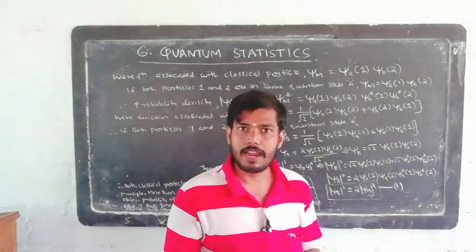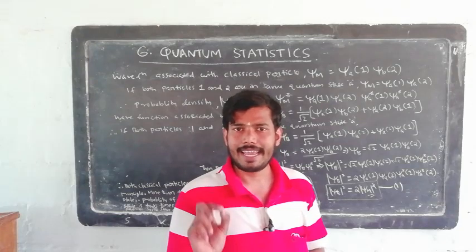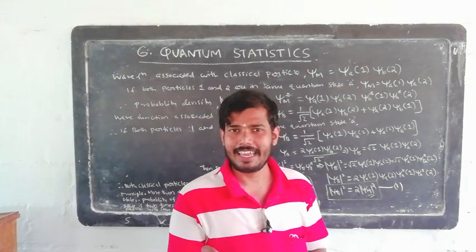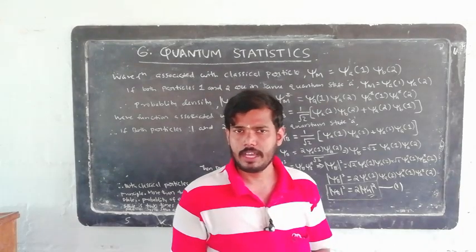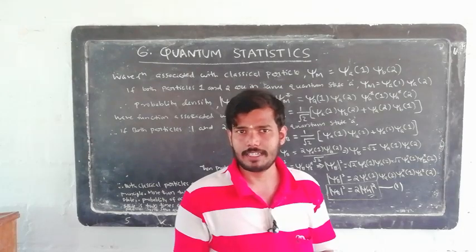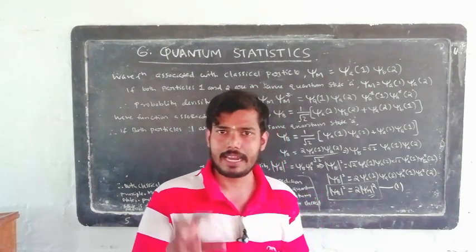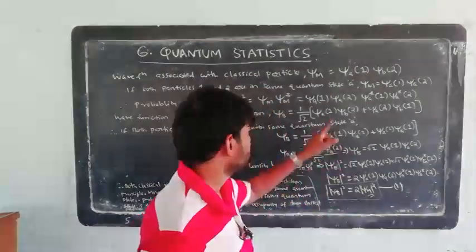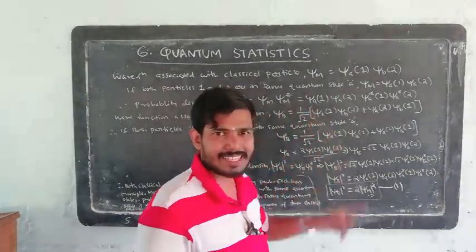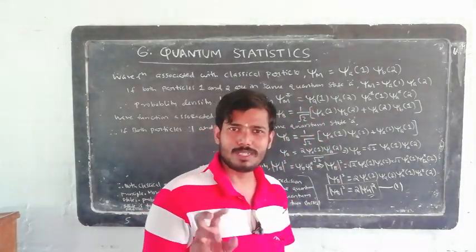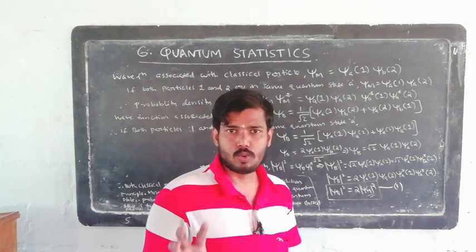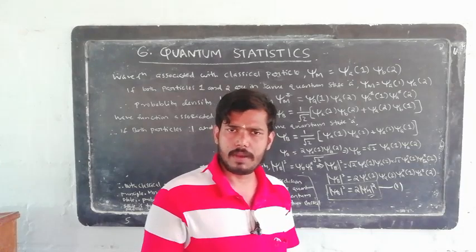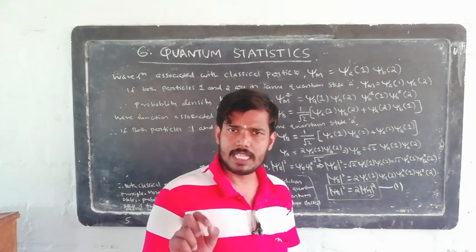The two classical particles have one state — one state exists. What is the Pauli exclusion principle? No two particles can occupy the same quantum state; in a quantum state, one particle exists. The Pauli exclusion principle doesn't apply here — classical particles do not obey the Pauli exclusion principle.